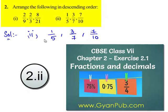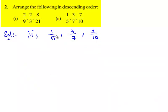Now let's move on to the second part of the question. Here we need to compare 1/5, 3/7, and 7/10, find which is the greatest, and arrange these in descending order.